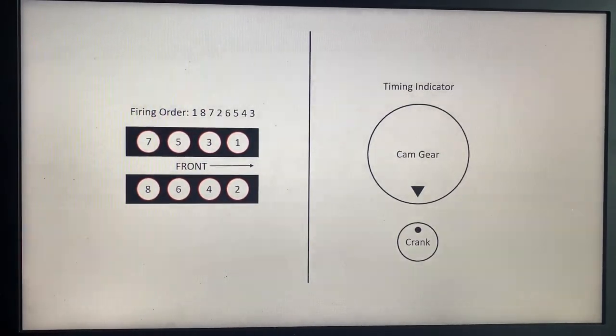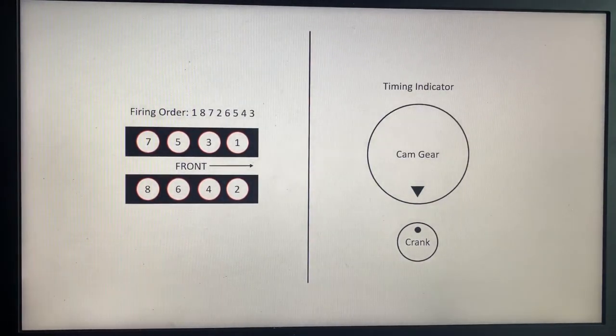Understanding the firing order of any LS-based engine, which includes the Gen 3 and Gen 4 motors like the LS1, LS2, LS3, and LS7, as well as the 5.3 liter, 4.8 liter, and 6.0 liter Vortec. The firing order on all these LS engines is on the left-hand side of the screen: 1-8-7-2-6-5-4-3.